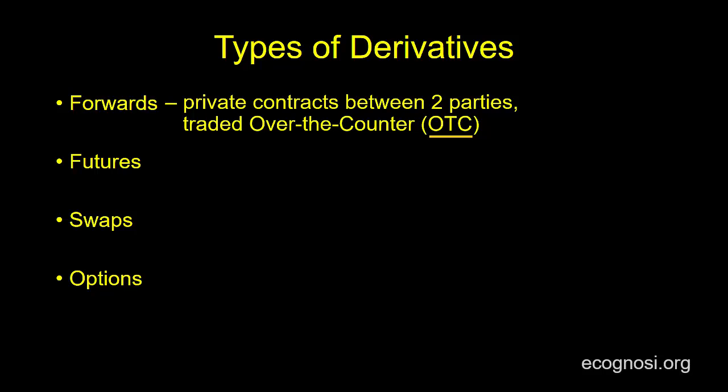Now futures, on the other hand, although still contracts for future delivery, are traded on exchanges. One example is the Chicago Mercantile Exchange. So if we were to go back to the gold example, if that transaction had taken place through an exchange instead of the two parties privately getting together in a contract, then that would be an example of a futures contract instead of a forward. Of course, the fact that futures are exchange-traded gives rise to other considerations that we will see as we progress.